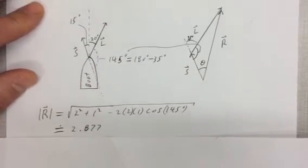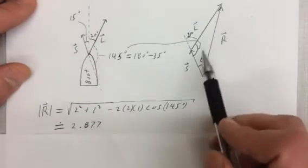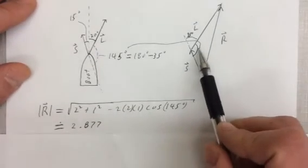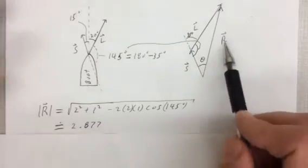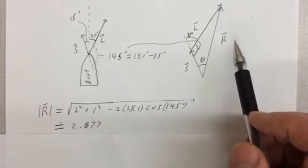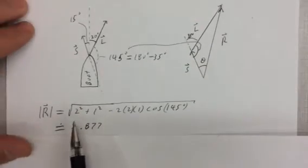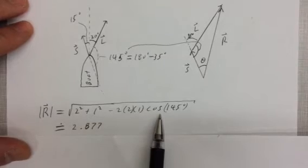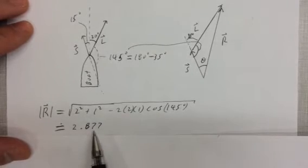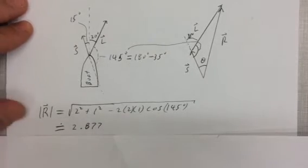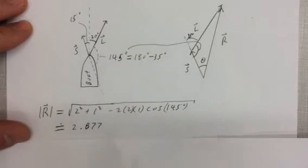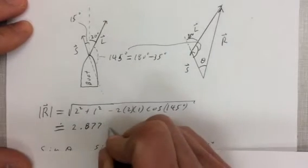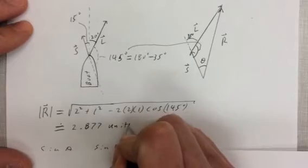Okay, so to find out the magnitude of R, we're going to use cosine law. Okay, cosine law uses the angle contained between two given sides to find the opposite side. So we've plugged it in here to cosine law and we get 2.877 units. Okay, so we'll call that units because we don't know what the units are.